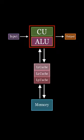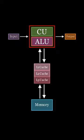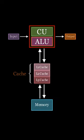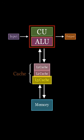The basic components of a computer system include input and output devices, the CPU, memory, and cache. The cache is further divided into levels, with L1 cache being the closest to the CPU and therefore the fastest, followed by L2 and L3 caches.